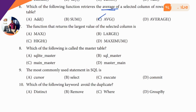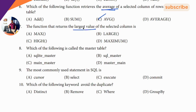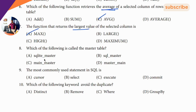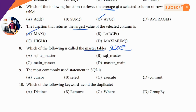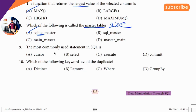Seventh question: largest value — this question uses the clue 'largest screen in the IMAX theater,' so the answer is MAX. Next, ninth question: school master table — you can see 'light adder,' so the answer is SQLite.